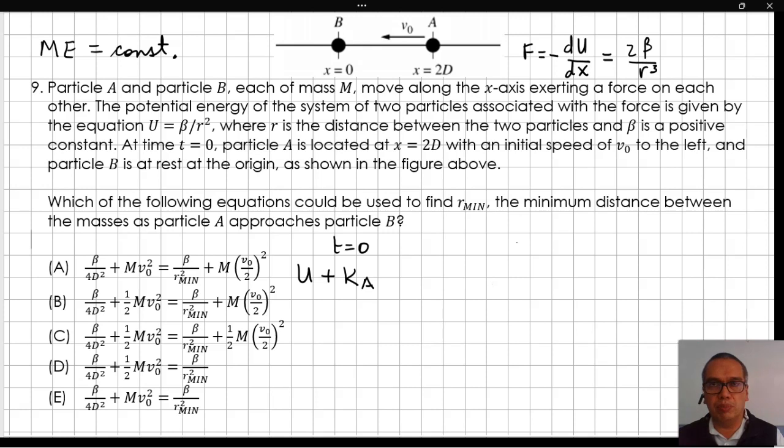At the time the two particles are separated the minimum distance r min, the two particles are at relative rest, which means that they must have the same final velocity.